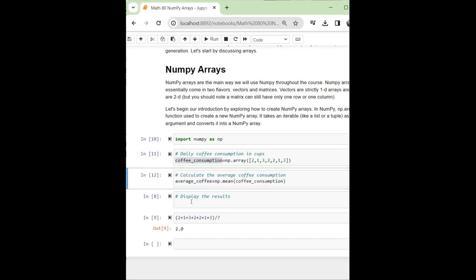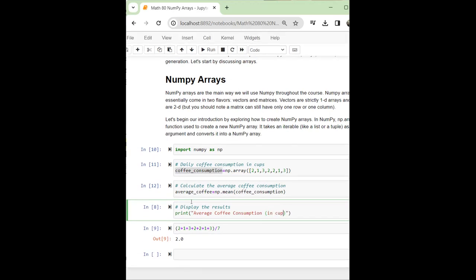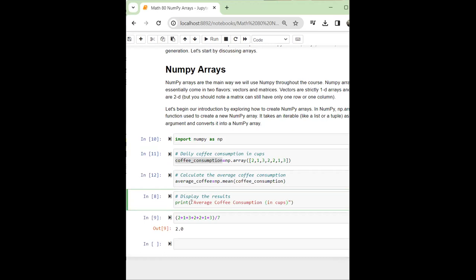Now, I'm going to display the result. I'm going to use print, open parenthesis, and then double quotes, 'average coffee consumption in cups' with a colon, and then a comma, and I'm going to pass in the variable average_coffee.